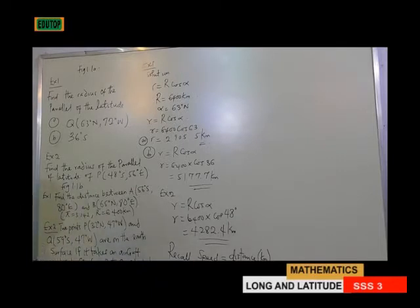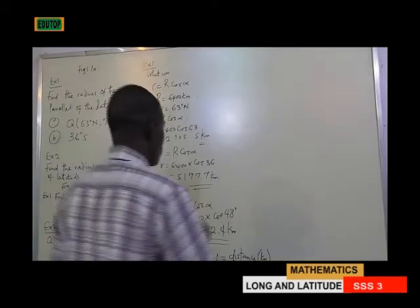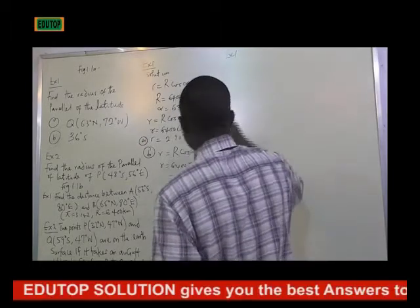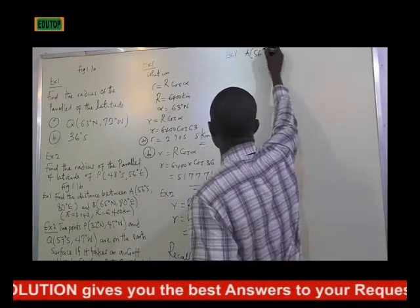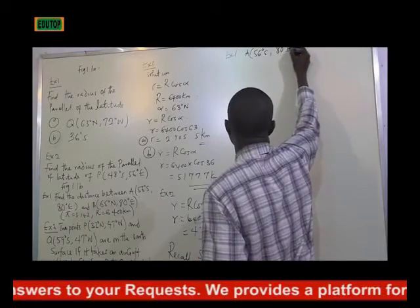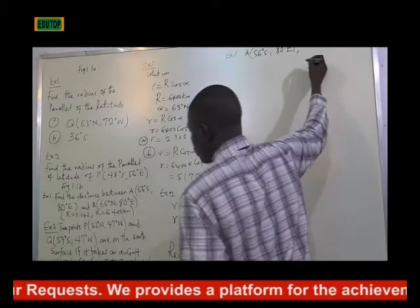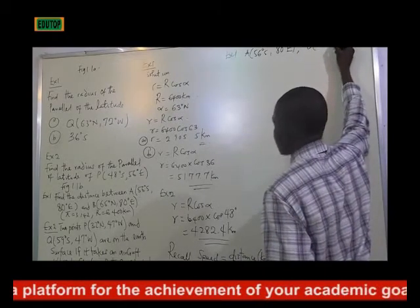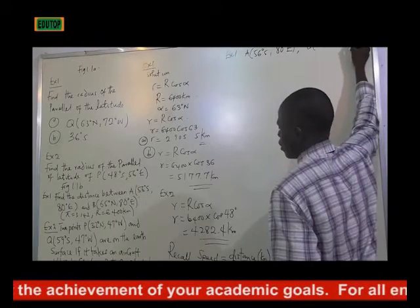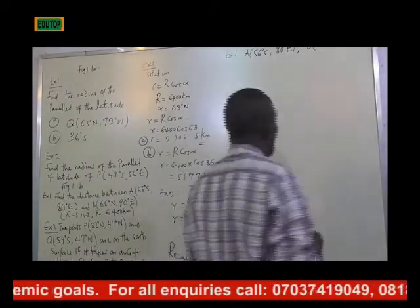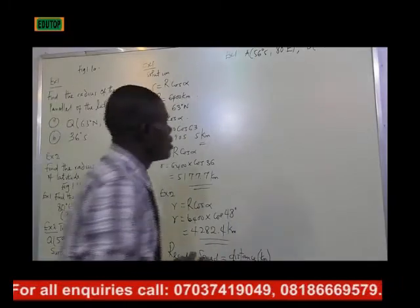We have figure 1.1b. Find the distance between the given points. In example 1, point A is given as 56 degrees south, 80 degrees east. Point B is given as 65 degrees south — wait, the longitudes remain the same at 80 degrees east while the latitudes are different.